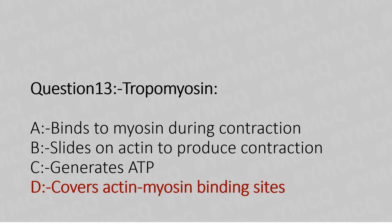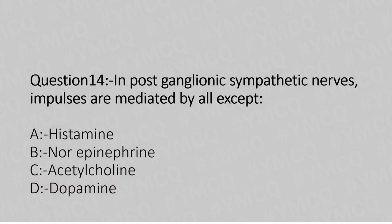Now let's move to question number 14. In postganglionic sympathetic nerves, impulses are mediated by all except — option A: histamine, option B: norepinephrine, option C: acetylcholine, option D: dopamine. The answer is option A, histamine.